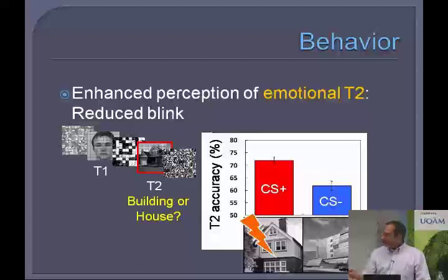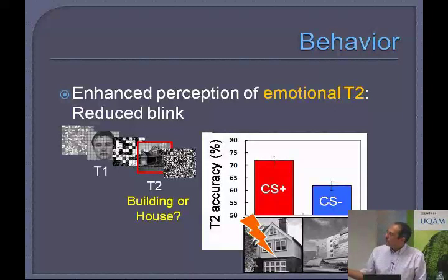We added a conditioning phase before the experiment, pairing buildings or houses with mild shock, counterbalanced across subjects. These shocks were uncomfortable but not painful, and subjects chose the level themselves. What we found was an enhancement of detectability for the shock-paired category relative to the unpaired category — so if houses were paired with shock, subjects would miss them less during the attentional blink.